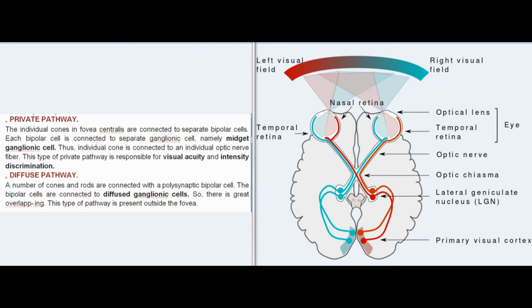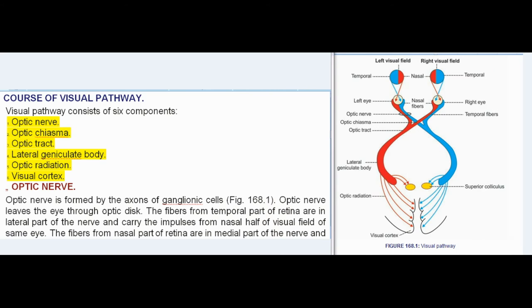This private pathway is responsible for visual acuity and intensity discrimination. In the diffuse pathway, a number of cones and rods are connected with a polysynaptic bipolar cell, and the bipolar cells are connected to diffused ganglionic cells, resulting in great overlapping. This type of pathway is present outside the fovea.